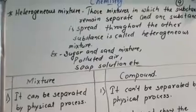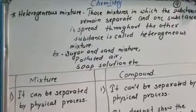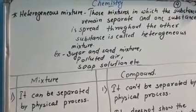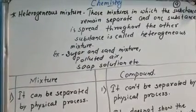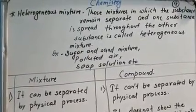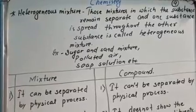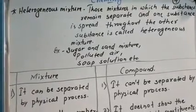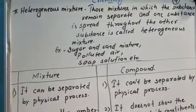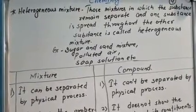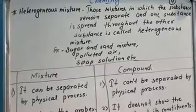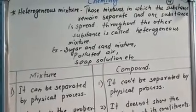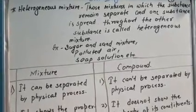Now we will talk about heterogeneous mixture. Those mixtures in which the substances remain separate and one substance is spread throughout the other substance are called heterogeneous mixture. Ye aise mixtures hain jismein substance separate rehte hain aur ek substance doosre substance ki oopar spread hota hai.